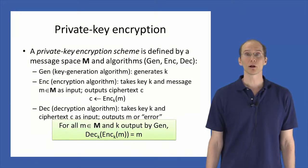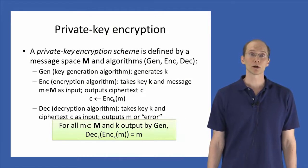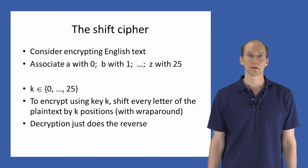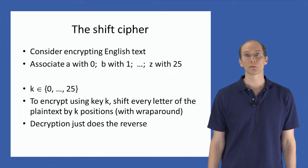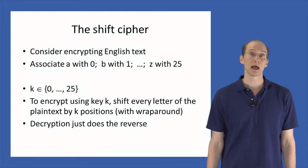I want to illustrate all this using a simple example of a historical encryption scheme called the shift cipher. Consider encrypting regular English text. We will identify English letters with the numbers from 0 to 25, so A will be associated with 0, B with 1, and so on. The key K will be an integer in the range from 0 to 25. To encrypt a message M using the key K, we simply shift every letter of the plaintext by K positions, wrapping around at the end of the alphabet.